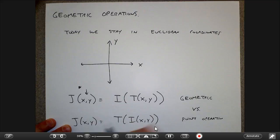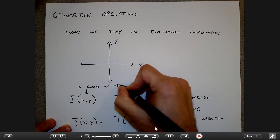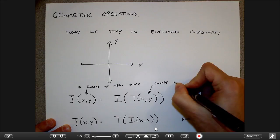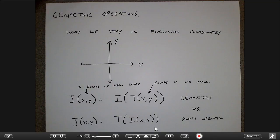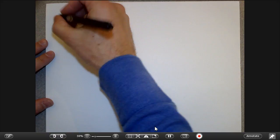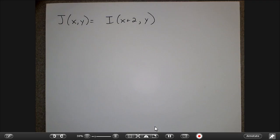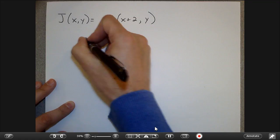To contrast with what we talked about last time: previously J of XY was the transformation of the color at XY — take the color at XY, turn it into some other color, and keep it in the same place. This is the other way around: keep the same color, but get that color from a different place. These are two dual operations of each other. As a first example, J of XY equals I of X plus 2, Y.